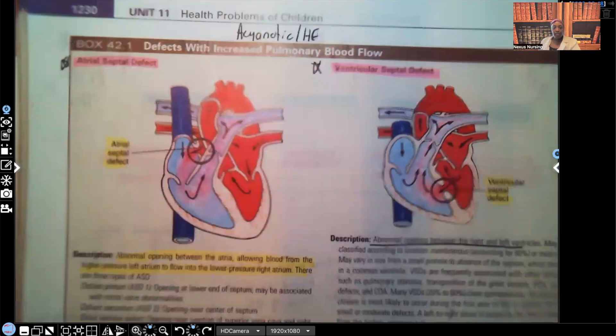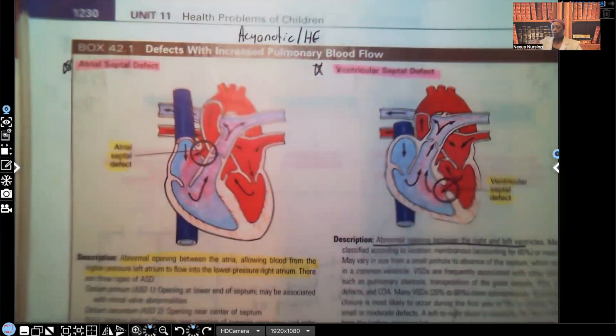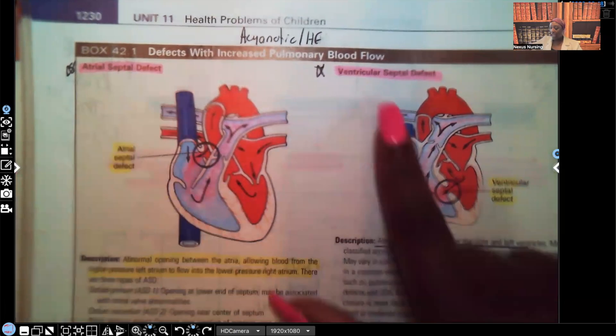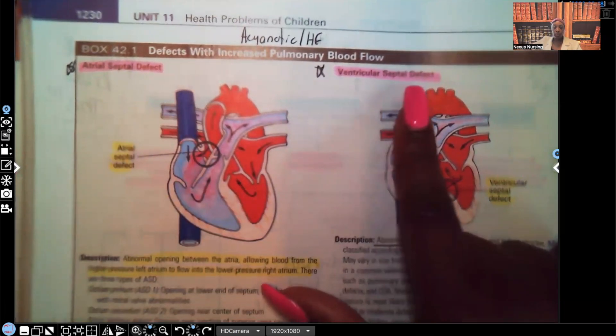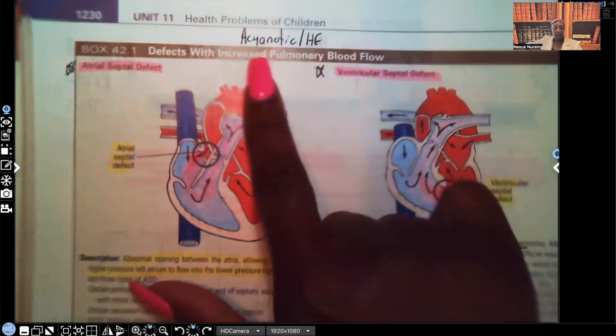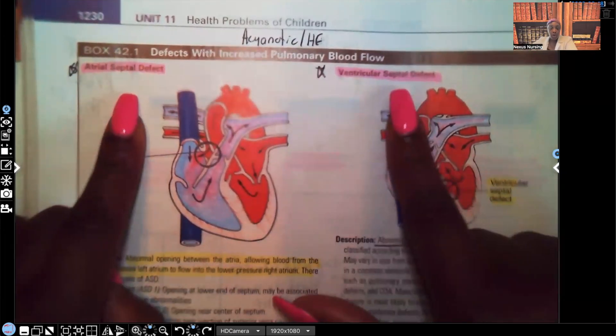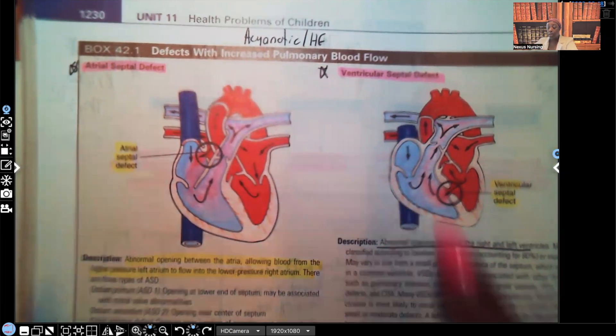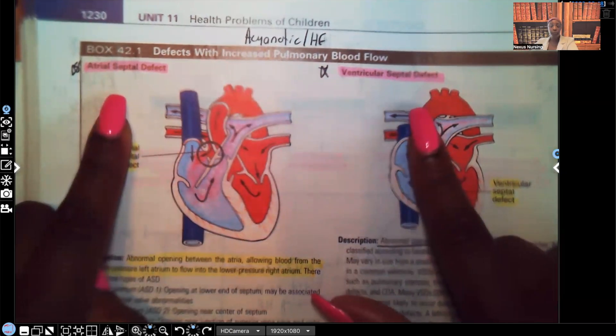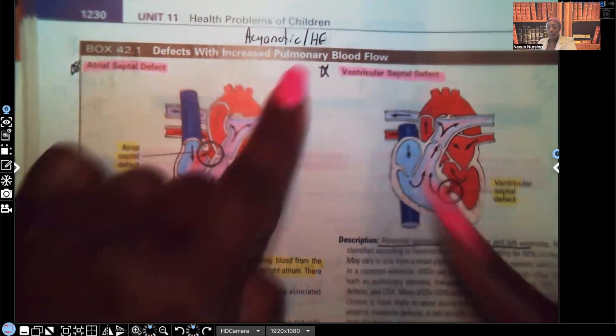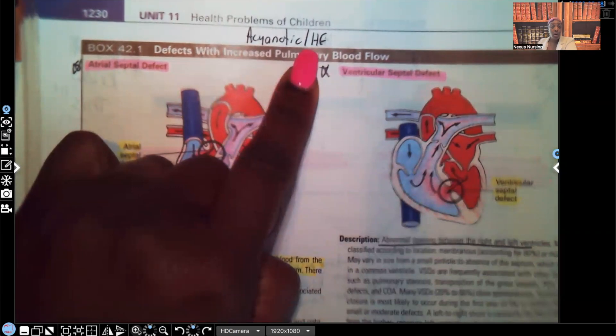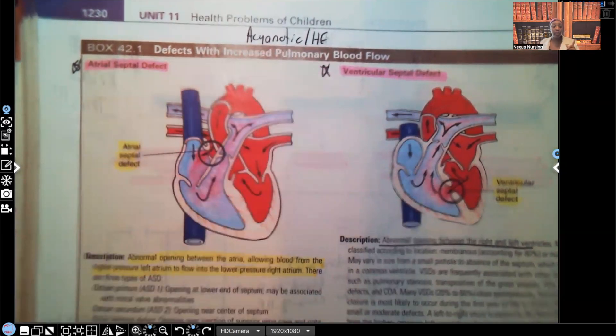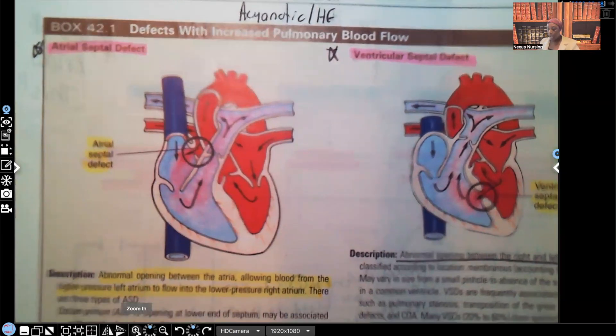In this video, I'm going to specifically go over atrial septal defect and ventricular septal defect. Don't forget these two disorders fall under acyanotic. We don't expect to see that patient turning blue, but we do expect that patient to have heart failure. And you're going to understand why in a minute.